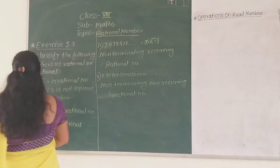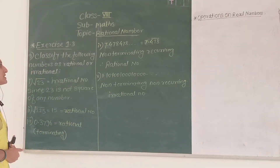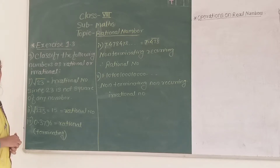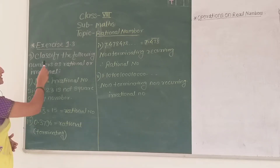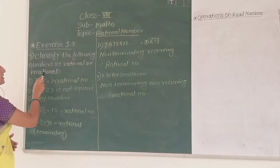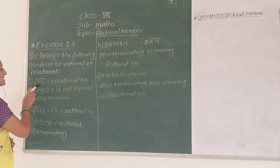Here our last example for this exercise is: classify the following numbers as rational or irrational. We have to classify the following numbers as rational or irrational. The first example is the square root of 23.